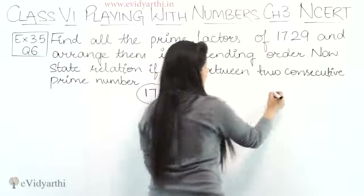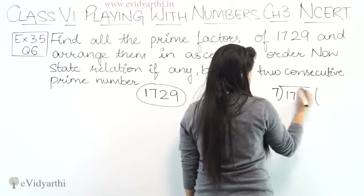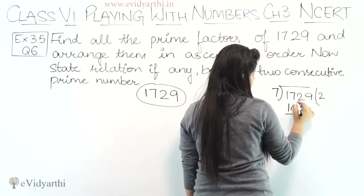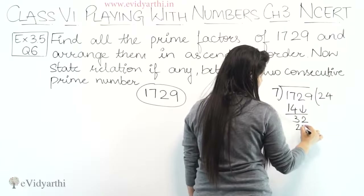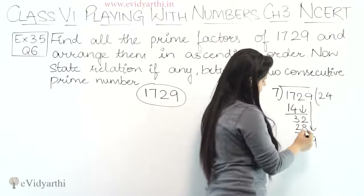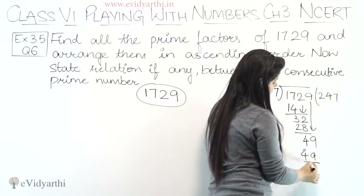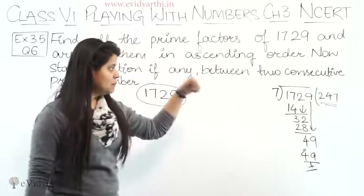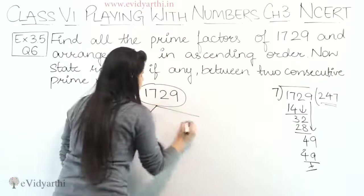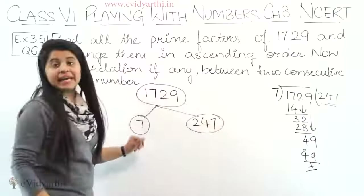From the 7 times table, we divide 1729 by 7. 7 into 247 is 1729, so 1729 ÷ 7 = 247. So 7 is a prime factor and the second number is 247.